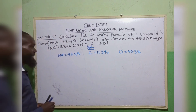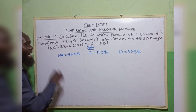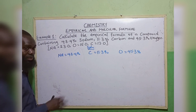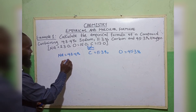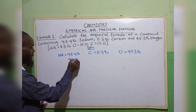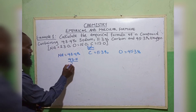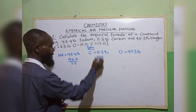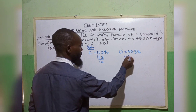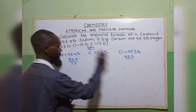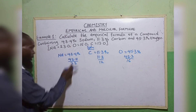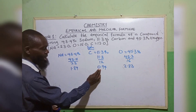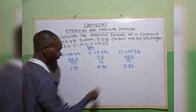The next thing is to divide by their atomic mass: 43.4 divided by 23 for sodium, 11.3 divided by 12 for carbon, and 45.3 divided by 16 for oxygen. When we divide this, we have 1.89, 0.94, and 2.83.